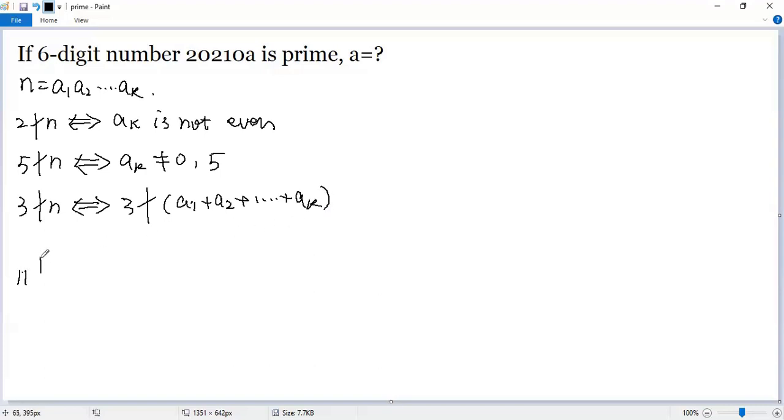Finally, 11 is not a factor of N if and only if 11 is not a factor of the difference of the sum of the digits in the odd position (A1 plus A3 plus A5) minus the sum of the digits in the even position (A2 plus A4 plus).